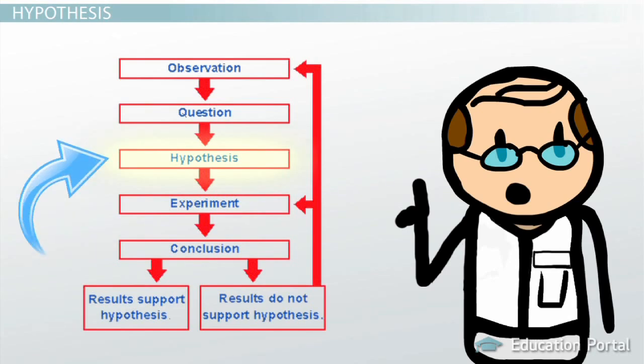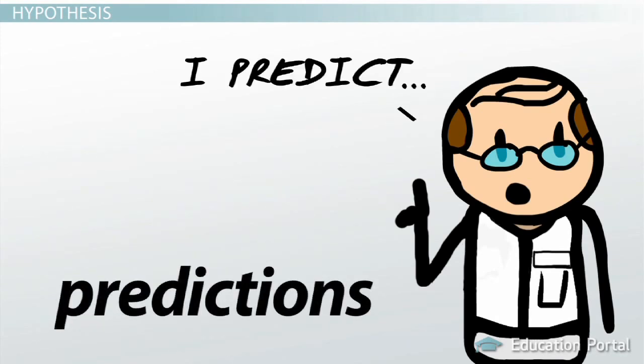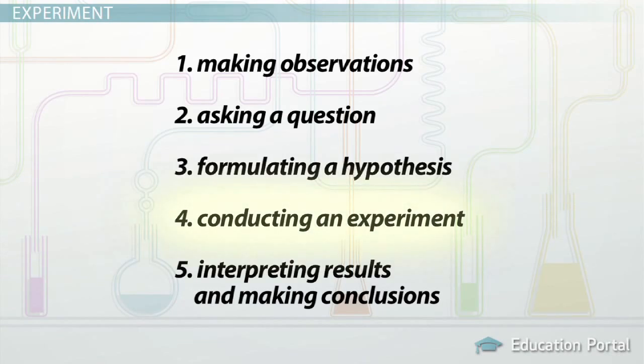Once the hypothesis is created, scientists make predictions about what should happen if the hypothesis is found valid and therefore supported, and also what should happen if the hypothesis is not valid and is rejected. Conducting an experiment is the fourth step in the scientific method.